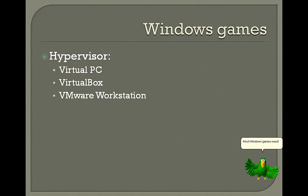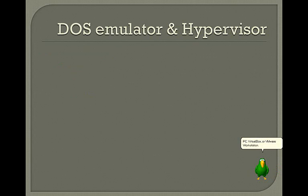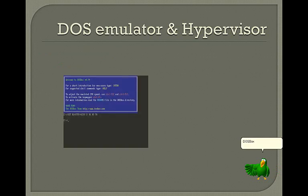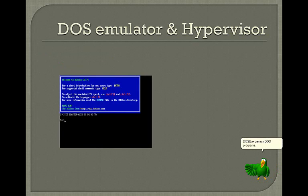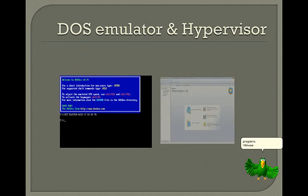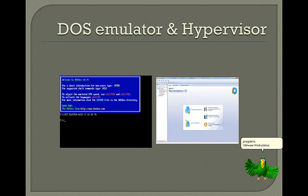Most Windows games need to be run on earlier versions of Windows using some hypervisor such as Virtual PC, VirtualBox, or VMware Workstation. DOSBox can run DOS programs. VMware Workstation can also run operating systems in a Virtual Machine.